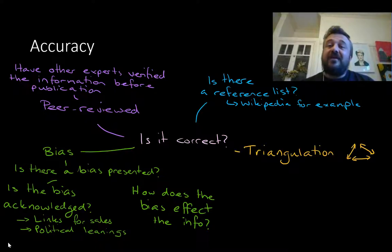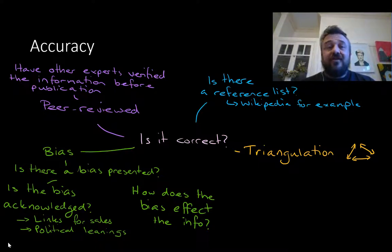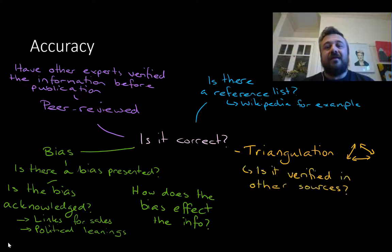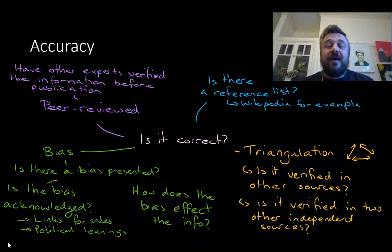Then we get to triangulation — find two other independent sources that don't reference each other, and see if they can back up the idea and back up the evidence. Is it verified in other sources? They need to be independent.